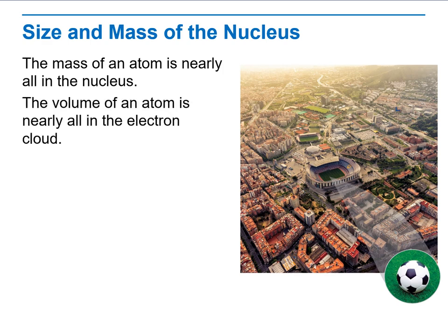The volume of an atom reflects the volume of the electron cloud with the example that the radius of a hydrogen atom is 50,000 times larger than the radius of a hydrogen nucleus.